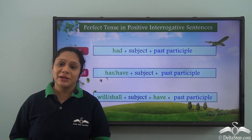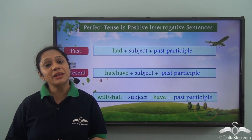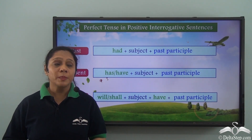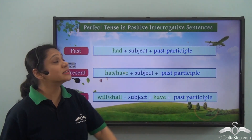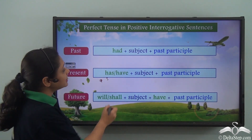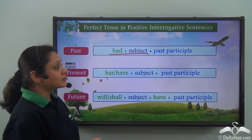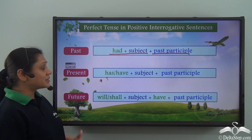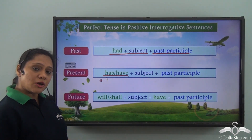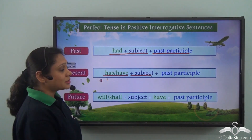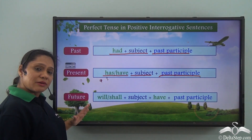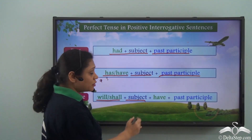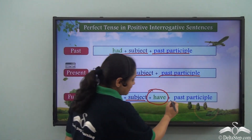Today we have learnt the use of perfect tenses in interrogative sentences. Interrogative sentences can be either positive or negative. Positive interrogative sentences portraying the past perfect tense are written as 'had' followed by the subject followed by the past participle. In the present perfect tense, they are written as 'has' or 'have' followed by the subject and then the past participle. In the future perfect tense, the form is 'will' or 'shall' followed by the subject, followed by 'have', and then the past participle.